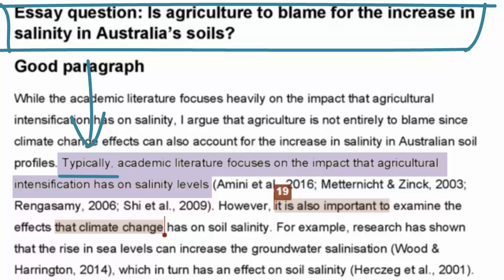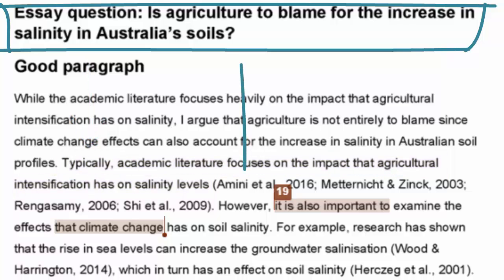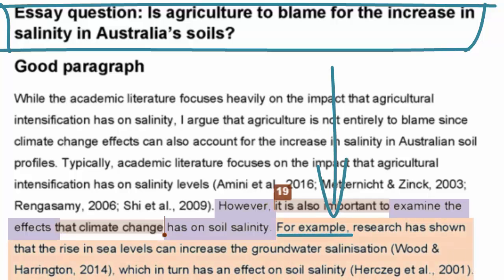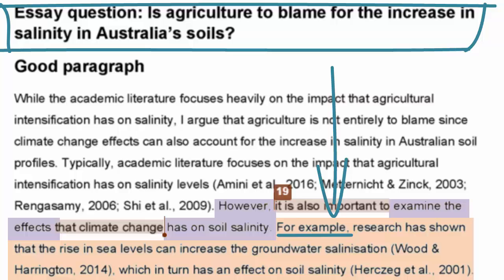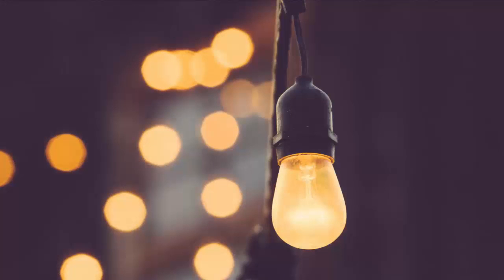At the beginning of the next sentence, the word 'however' shows that, in contrast to what is typically accepted, the student is critical of the trend. When the student writes, 'however, it is also important to examine the effects that climate change has on soil salinity,' this shows the student's own argument. Then in the next sentence, they give an example from the literature that they agree with. By using these linking phrases and language which shows critical evaluation, the student makes their own argument clearer in the body of the paragraph.